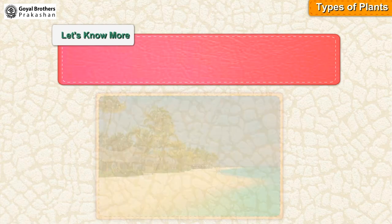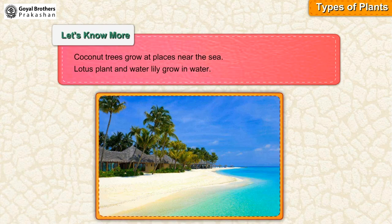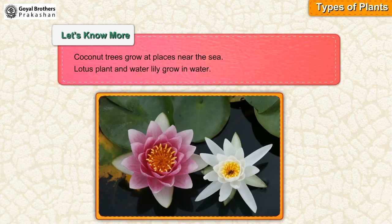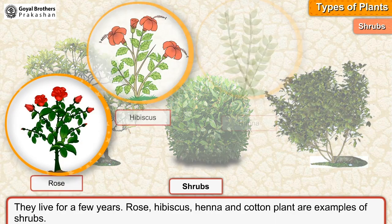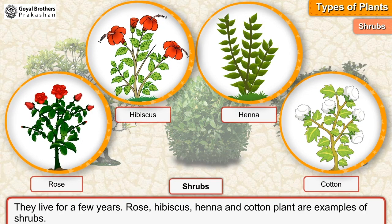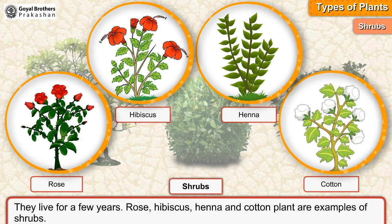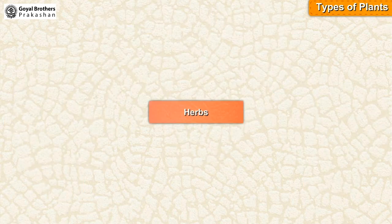Coconut trees grow at places near the sea. Lotus plant and water lily grow in water. Small plants with woody stems are called shrubs. Shrubs are smaller than trees and have thin, hard stems. They have many branches rising from the ground and live for a few years. Rose, hibiscus, henna, and cotton plant are examples of shrubs.